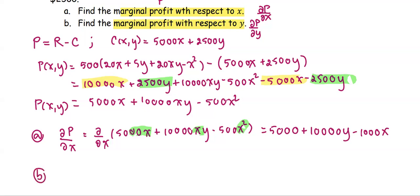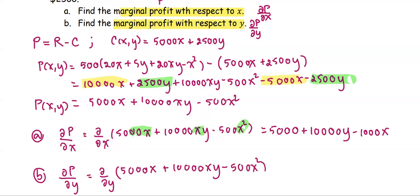In part B, we find the partial derivative of P with respect to y, treating y as the variable and the rest as constants. The first term 5,000x has no y, so its derivative is zero. The second term treats 10,000x as a constant multiplied by y, giving 10,000x. The last term −500x² has no y, so it contributes zero. The simplified result is ∂P/∂y = 10,000x, which is the marginal profit with respect to y.